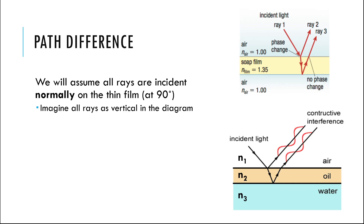Thankfully, the IB doesn't deal with the angles you see in diagrams — those are drawn to show what's happening. We assume everything is normally incident, meaning perpendicular — ray 1 goes straight down, reflects straight back up, and the second ray goes straight down through the film and reflects straight back up. So there's no trig or Snell's law to worry about. The equations in the data booklet assume this, and the IB should only give problems where rays are straight up and down.